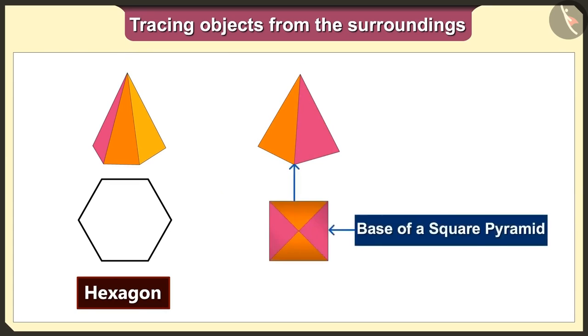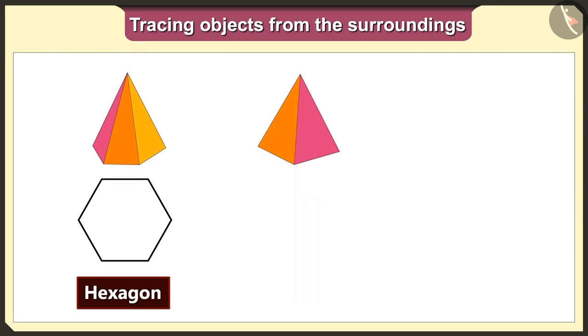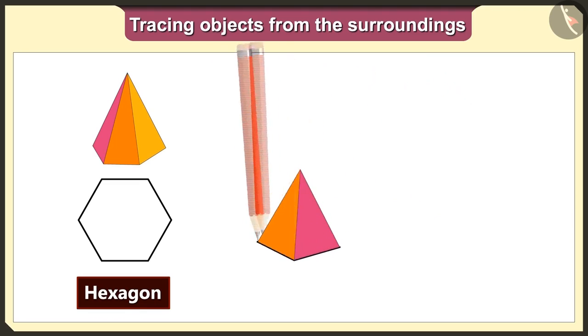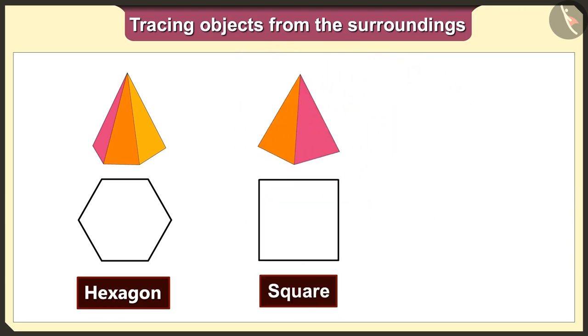The base of the square pyramid is square, so we will get square shape when we trace this pyramid.